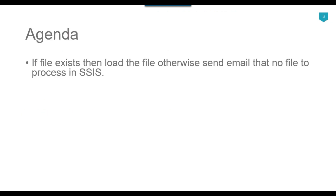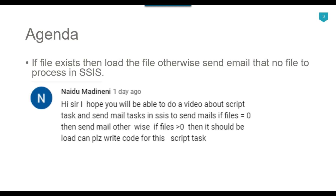The agenda of today's video tutorial is that our SSIS package should loop through all the files in a particular directory. If files are available then the process should load the file, and if there is no file to process then it should exit and send an email. A subscriber named Naido asked for a video about script task and send mail task in SSIS — if files equal to 0 then send an email, otherwise if file count is greater than 0 then load the file. So let's jump to the demo.